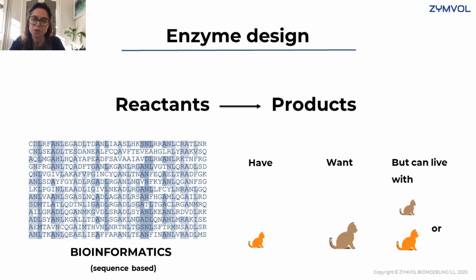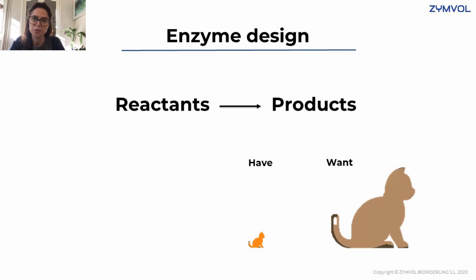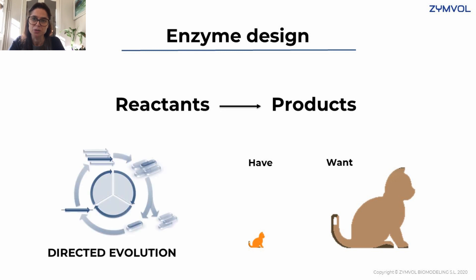The problem normally comes when we really want a big change. If we need a large improvement in our enzyme's properties, then bioinformatics is not the right tool. In that case, we are probably better off doing directed evolution. As we all know, this is an expensive and time-consuming approach. However, it is well known that it often leads to excellent results.